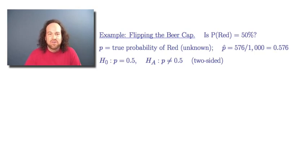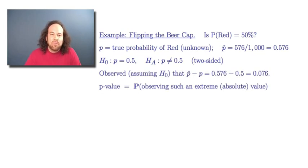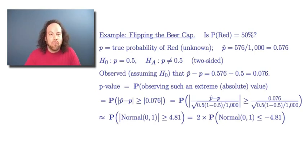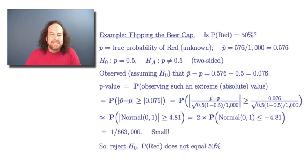We're not trying to figure out if it's strictly less or more than 0.5, just if it's different. Under the null hypothesis, p-hat minus p is 0.076. The p-value is the probability that the absolute value of the standardized statistic is at least 4.81, which equals twice the probability that a standard normal is less than or equal to minus 4.81. That works out to about one chance in 650,000.